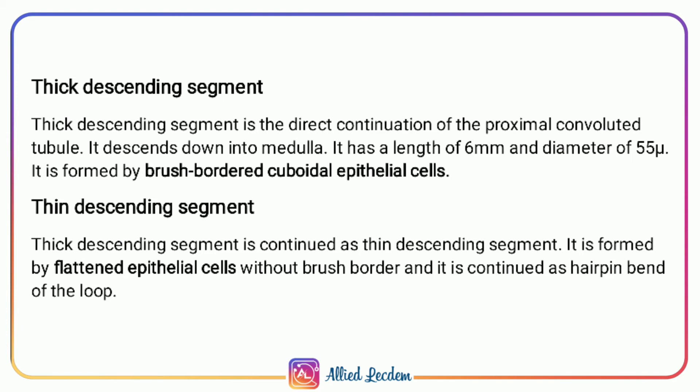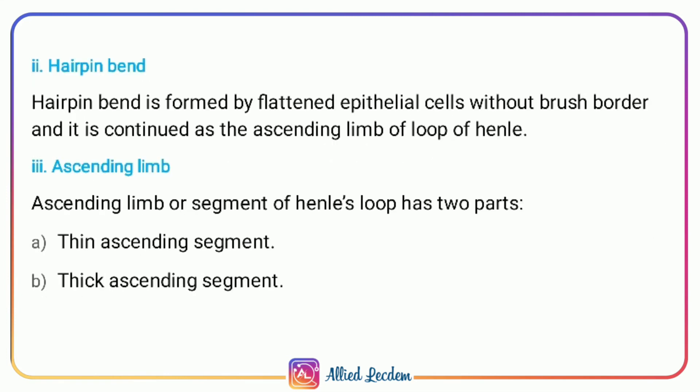The thick descending segment is continued as the thin descending segment, formed by flattened epithelial cells without brush border. This is continued as the ascending limb of the loop of Henle, also formed by flattened epithelial cells without brush border.